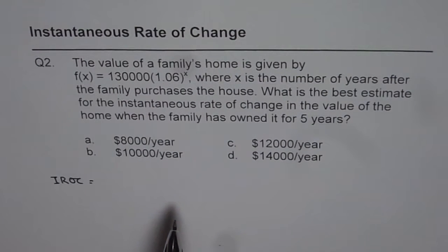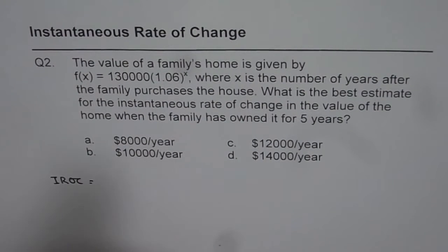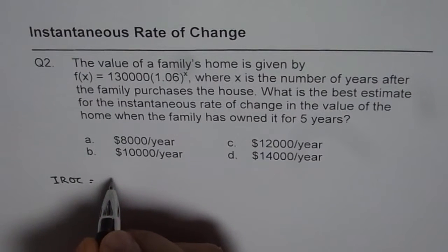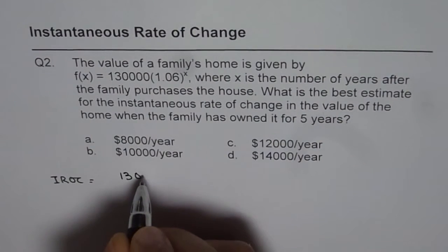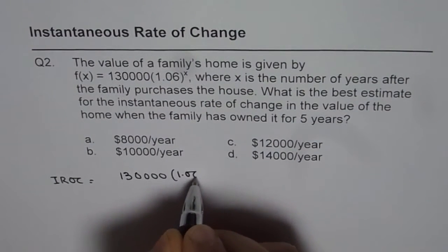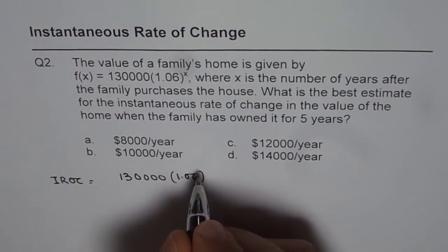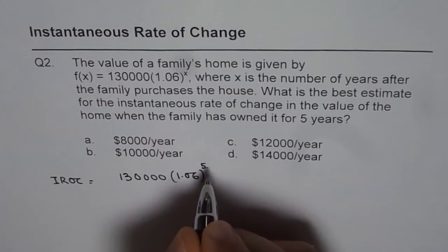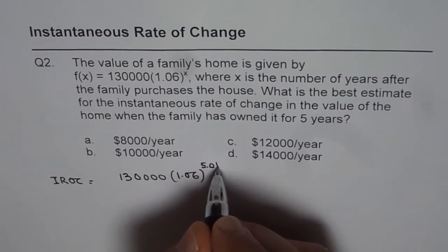We can follow the following method or the preceding method to calculate the instantaneous rate of change. Let us calculate using 130,000 × 1.06^x. We want x to be 5, so we take a value slightly more than 5 — for example, 5.01.